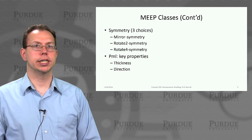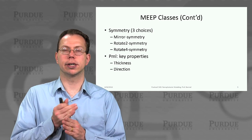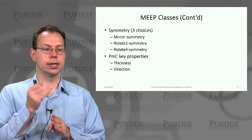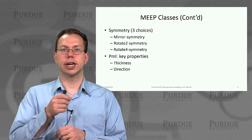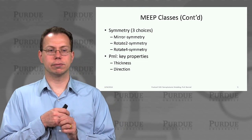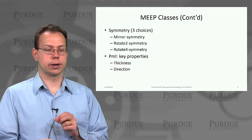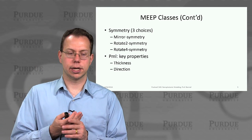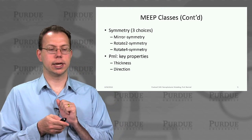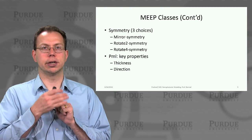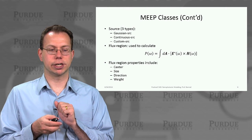In terms of symmetries, there are three choices: mirror symmetry along the X, Y, or Z planes; 180-degree rotational symmetry (rotate 2); and 90-degree rotational symmetry (rotate 4). Another very important class is the perfectly matched layers that go around the system, which have a certain thickness and direction. Greater thickness creates better absorption and less back reflection.